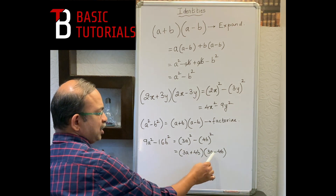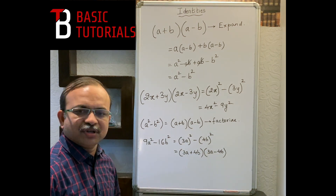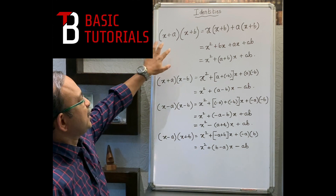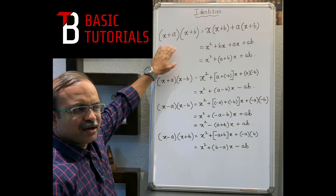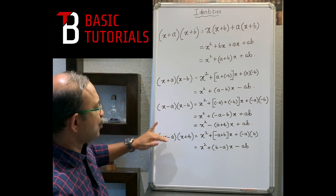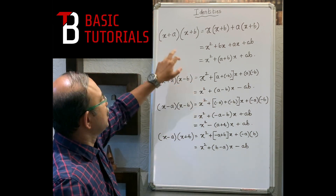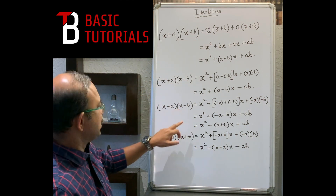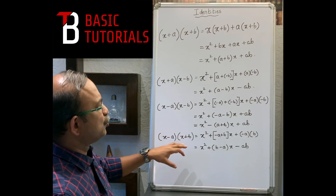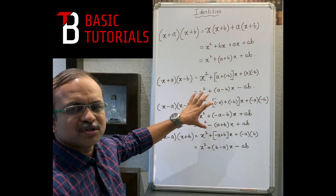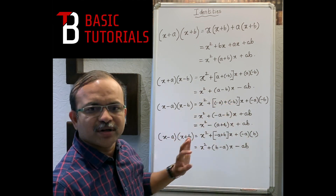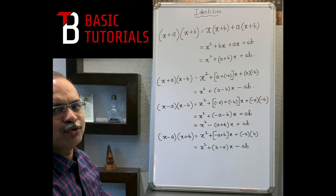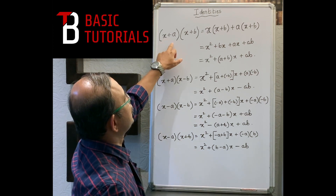Next is the identity (x+a)(x+b). This single identity can be written in four forms using different signs: (x+a)(x+b), (x+a)(x-b), (x-a)(x-b), and (x-a)(x+b). Instead of learning all four formulae separately, it's better to understand one formula and derive the others.